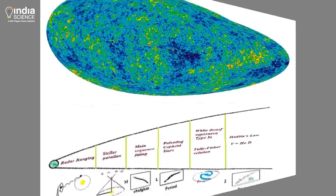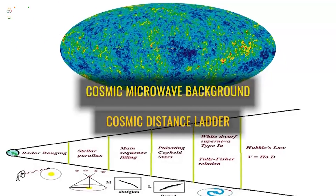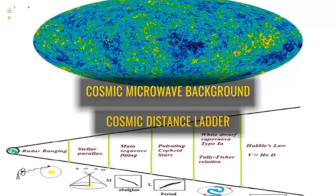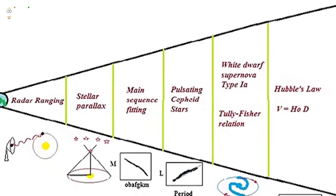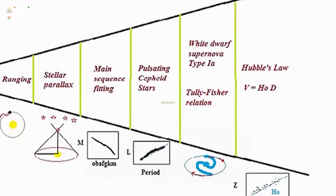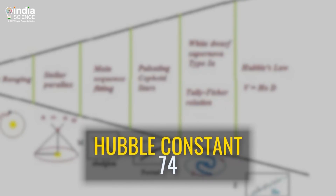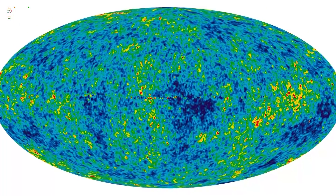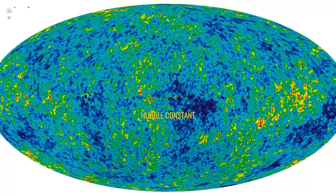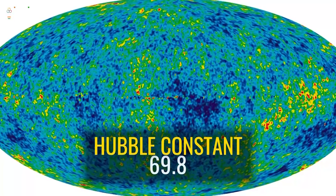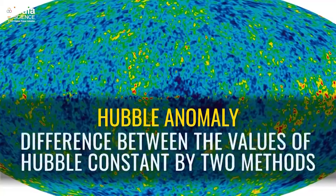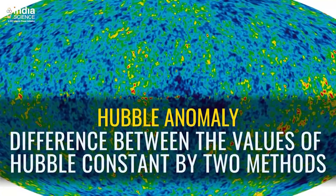Here comes the tricky part — both of these methods are giving different results. According to Hubble's Cosmic Distance Ladder method, the value of the Hubble constant is 74. And by using the Cosmic Microwave Background radiations, scientists found that this value is 69.8. This difference is known as the Hubble anomaly.